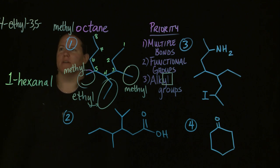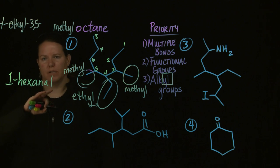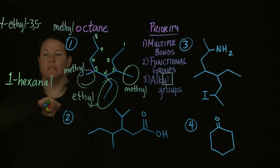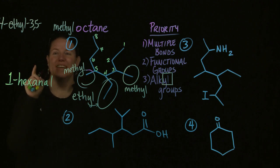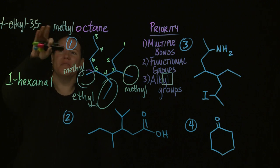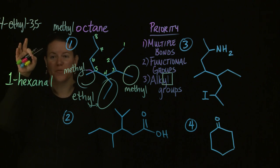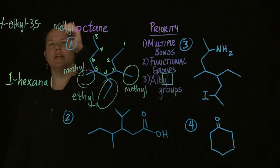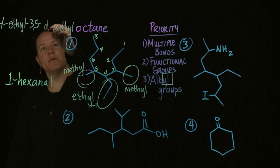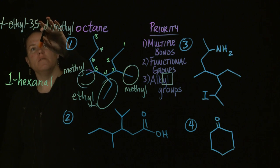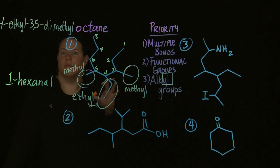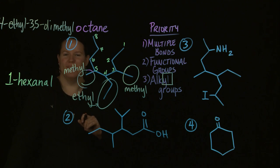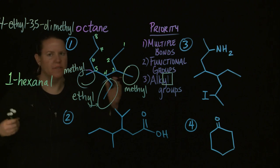It's not enough to call this 4-ethyl-3,5-methyl octane, because in organic chemistry we try to be as redundant as possible. We need to say not only is there methyl at 3 and 5, but there are actually two methyls - one at 3 and one at 5. We put a Greek prefix in front of the methyl to say how many there are, which is where di comes in. So the name of this compound is 4-ethyl-3,5-dimethyloctane.